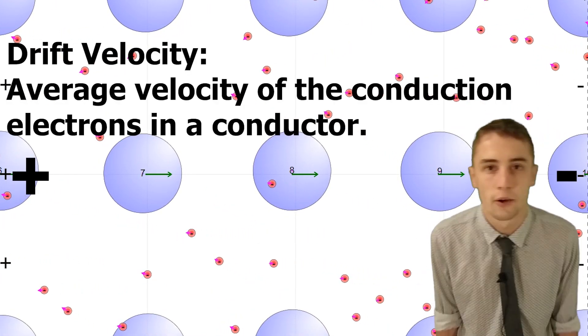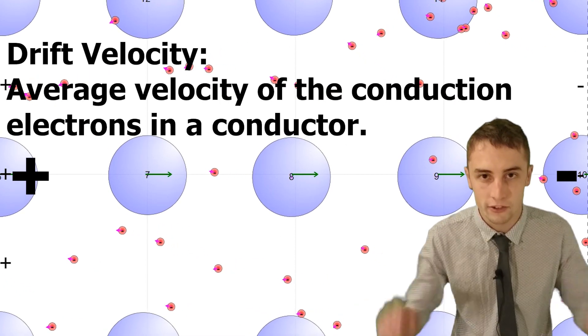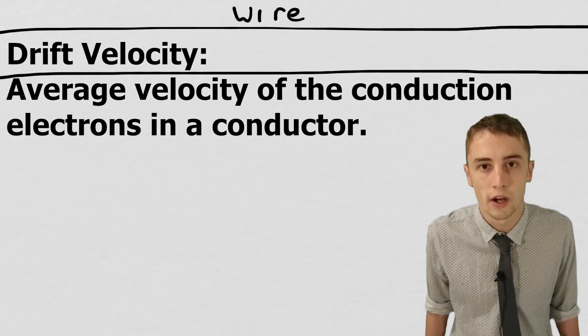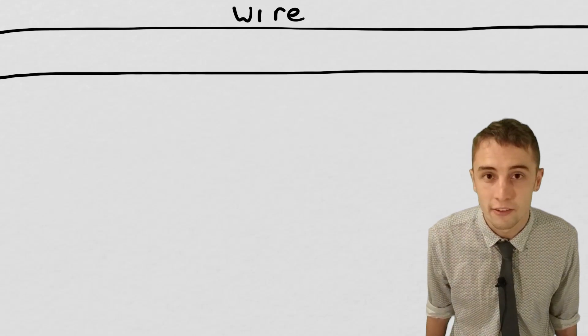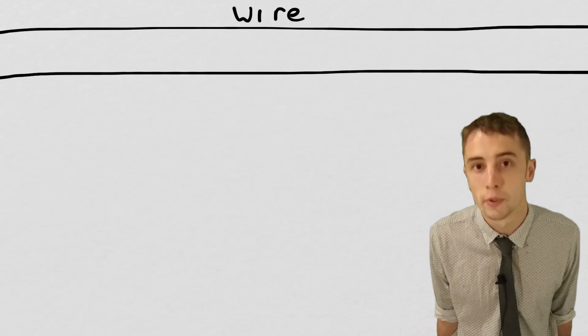Let's have a look at how we can calculate drift velocity. So let's have a look at our wire. Now our wire has got a certain number of electrons in it, free to move, per cubic meter.